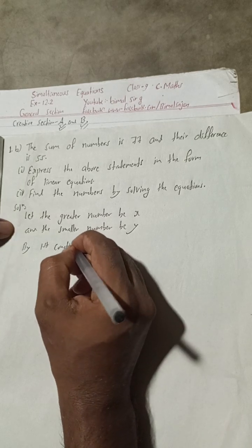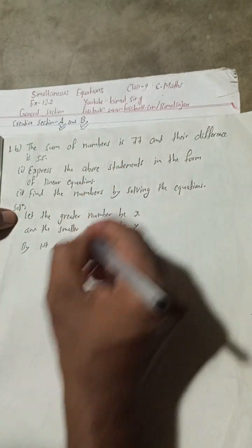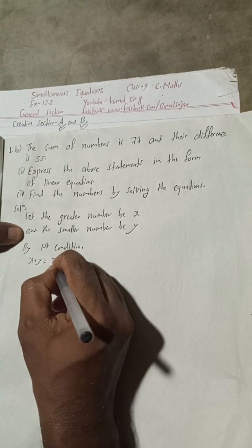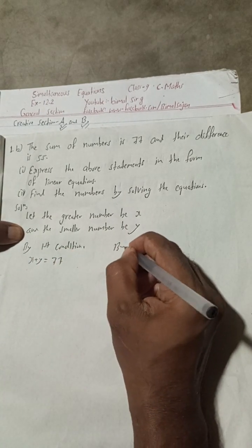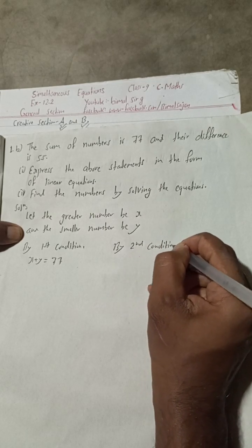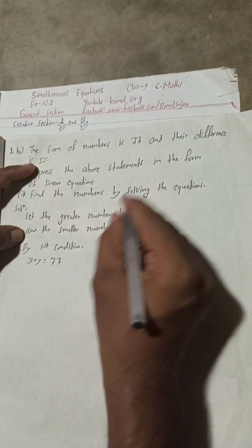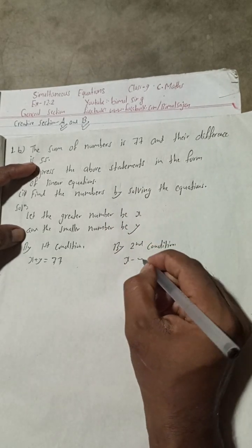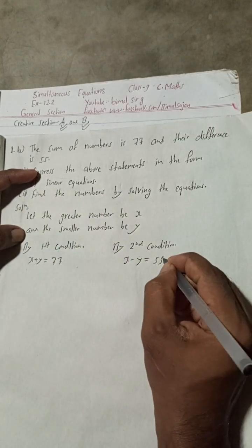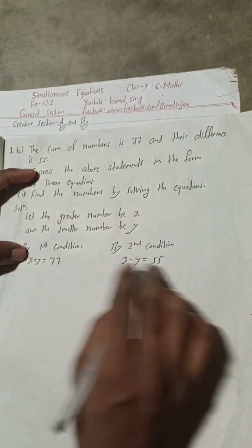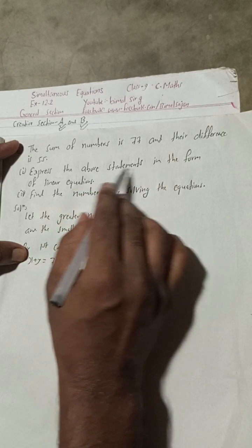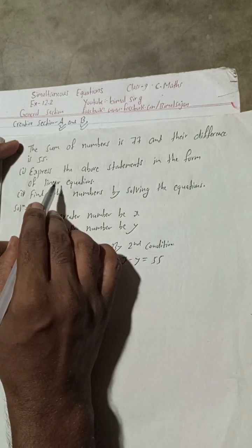By the first condition, the sum of the numbers is 77, that means x plus y equals 77. By the second condition, the difference — greater minus smaller — is 55, so x minus y equals 55. These two are the required linear equations.